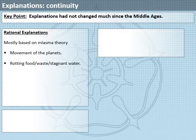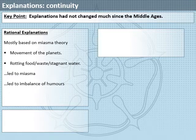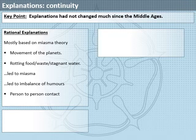People looked at the movement of the planets, as well as the filth around them, to explain why the air was bad. They believed that this led to miasma, which in turn led to an imbalance of the humours which would make people sick. People also believed that person-to-person contact was a key cause of the plague.